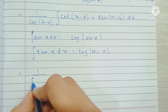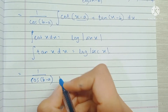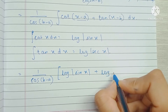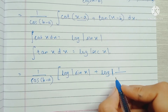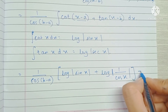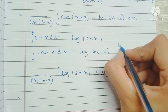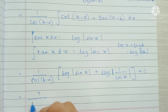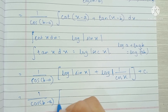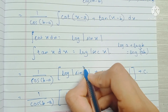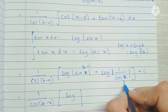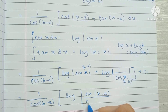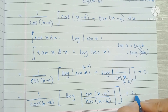So we can directly apply these formulas. The final answer is 1/cos(a-b) times [log|sin(x-a)| + log|sec(x-b)|] plus an arbitrary constant. We can write sec(x-b) as 1/cos(x-b), and using the log property that log(a) + log(b) = log(ab), this simplifies to 1/cos(a-b) times log|sin(x-a)/cos(x-b)| plus an arbitrary constant. That's the final answer.